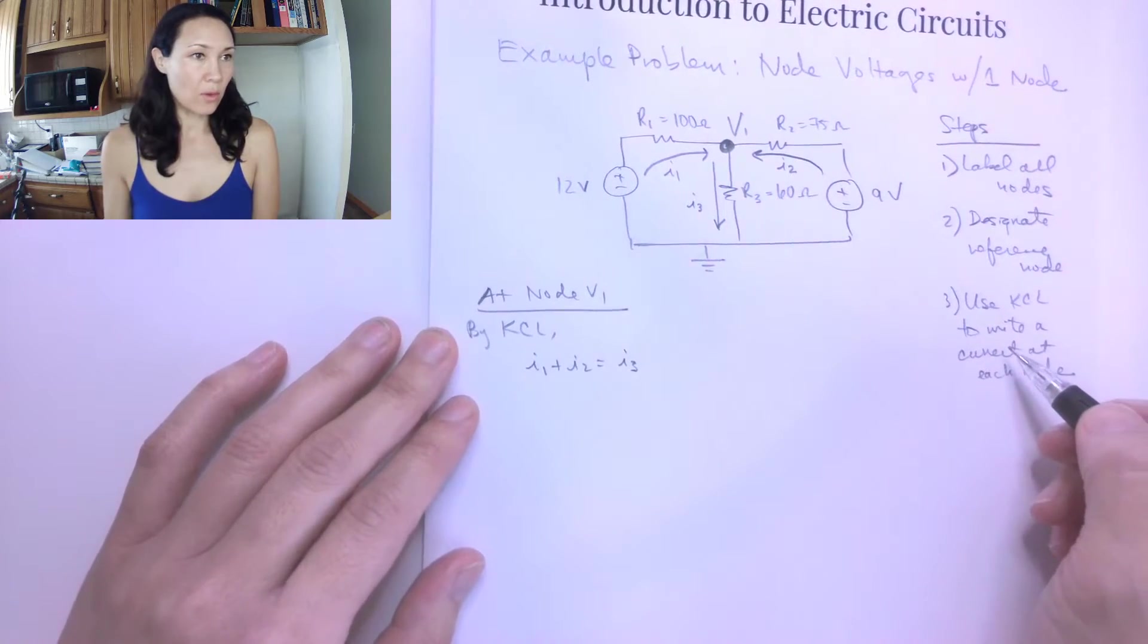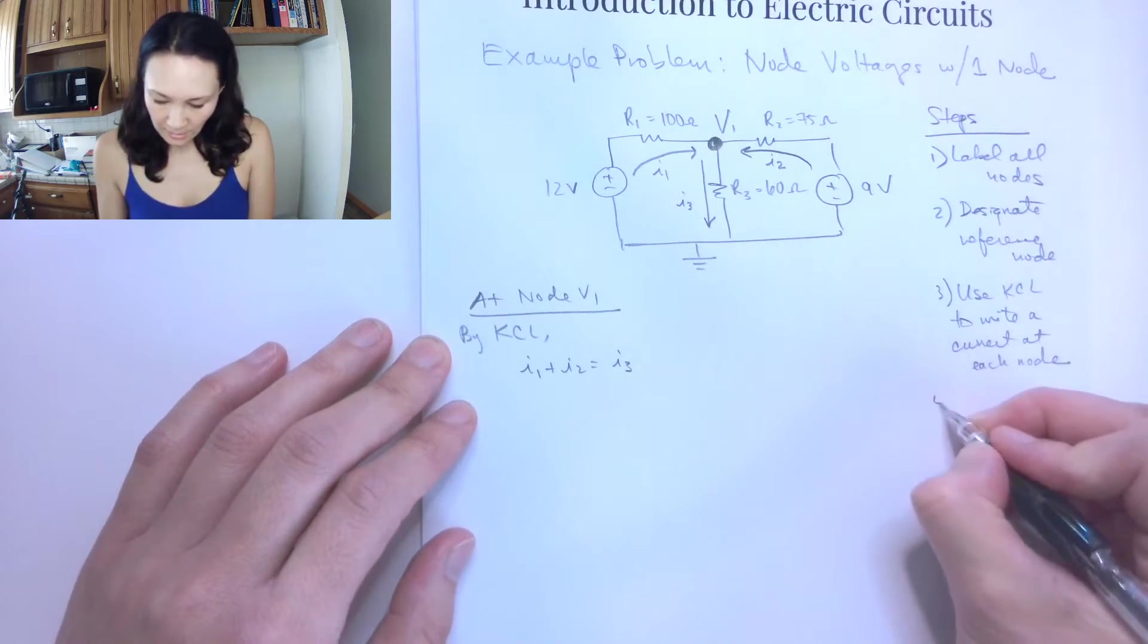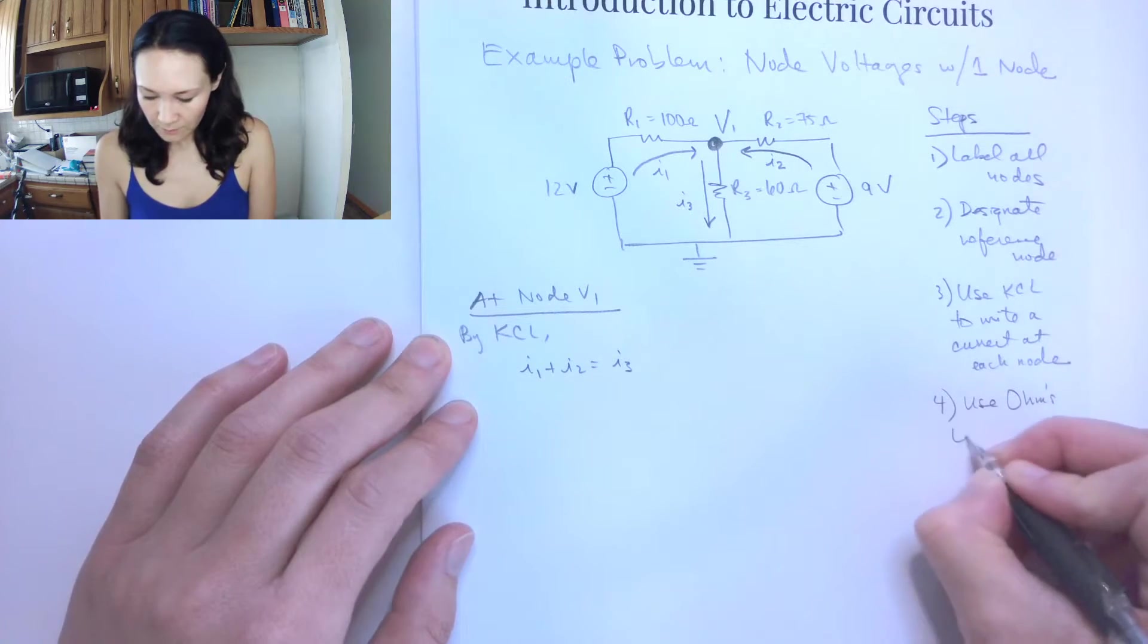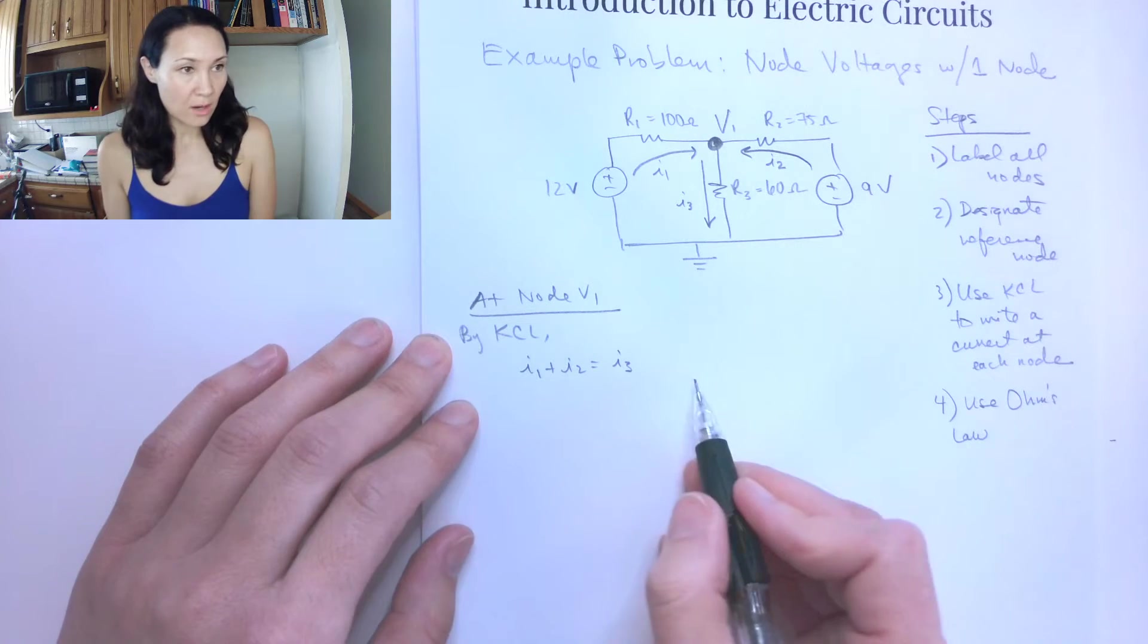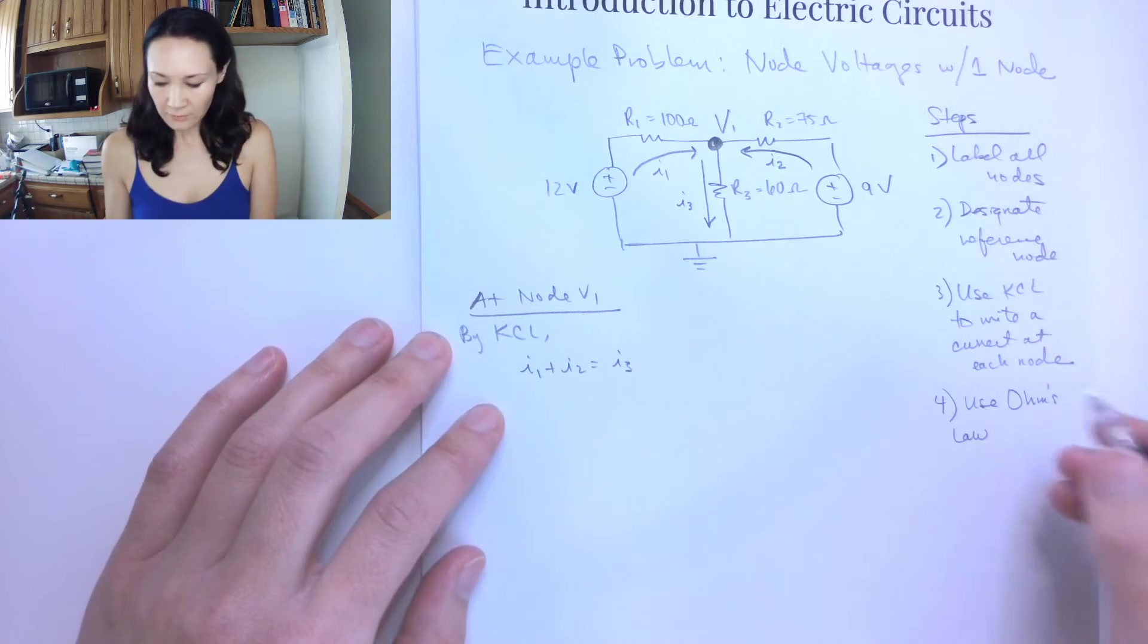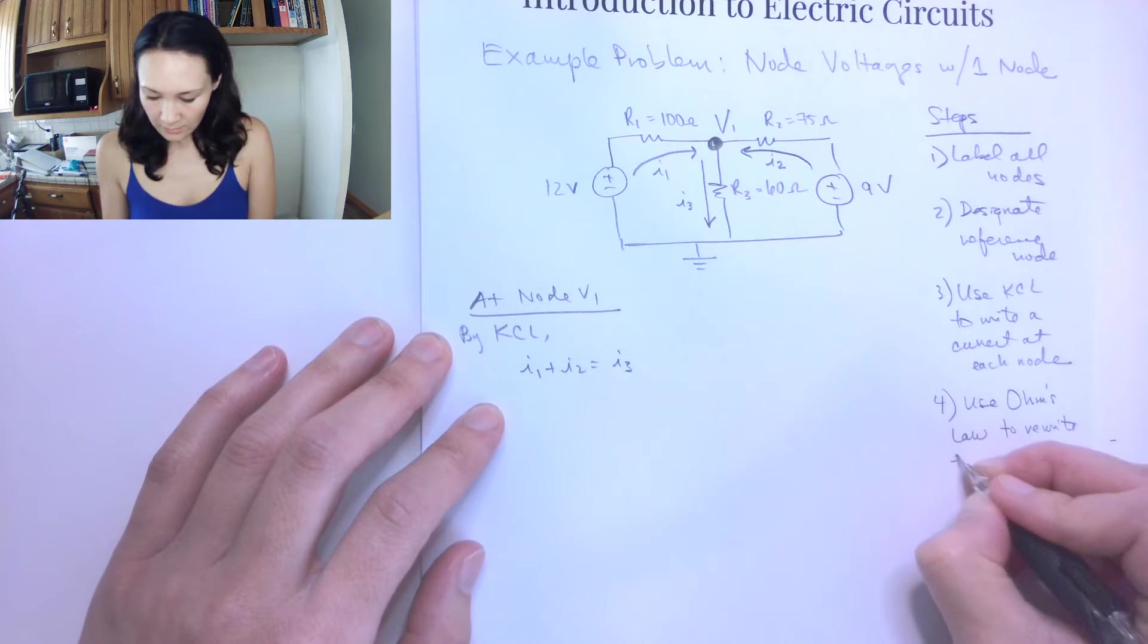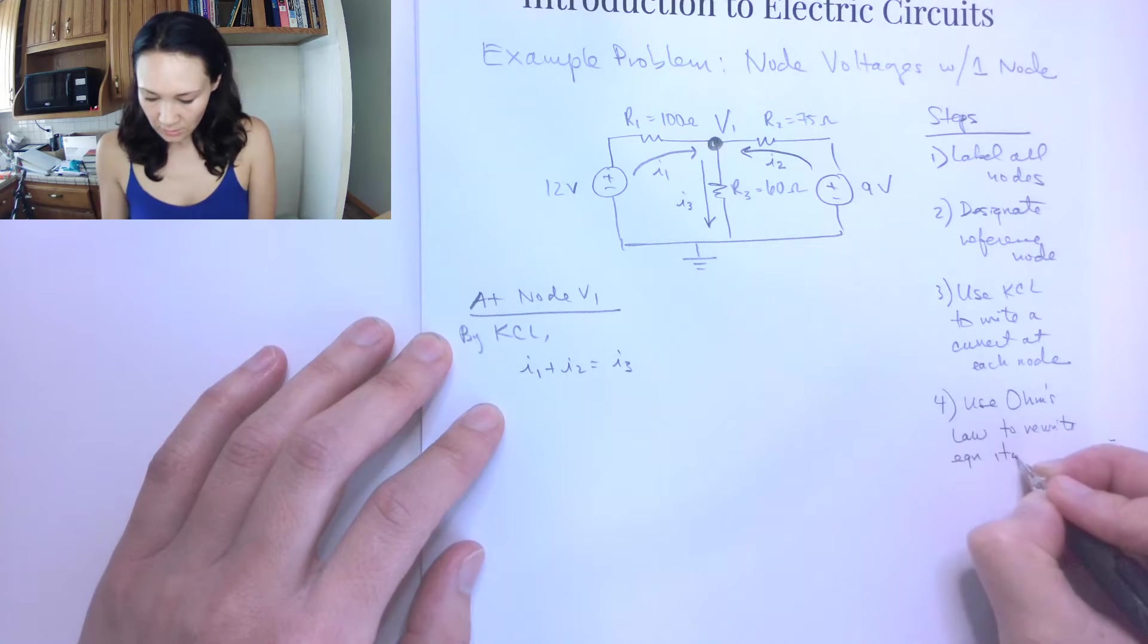So that's the third step for our node voltage process. The next thing we're going to do is we're going to use Ohm's Law to rewrite our KCL equation in terms of V and R.